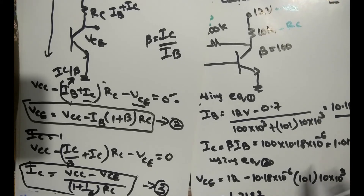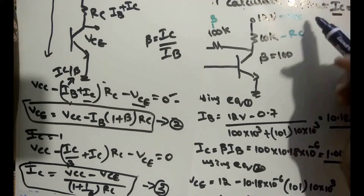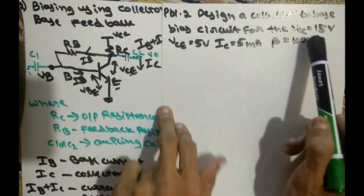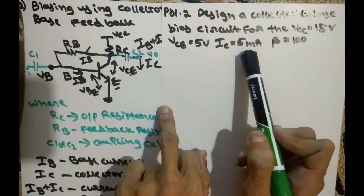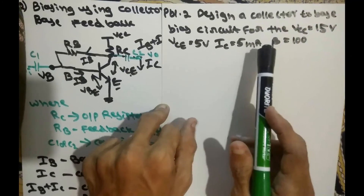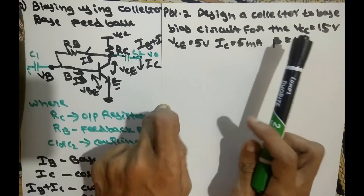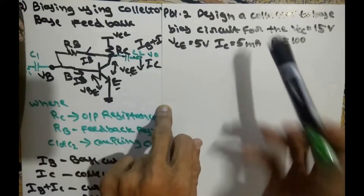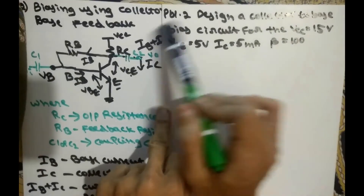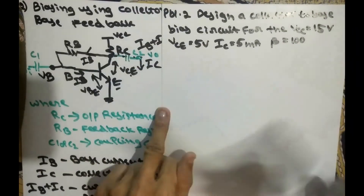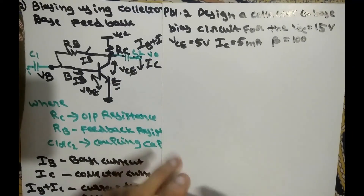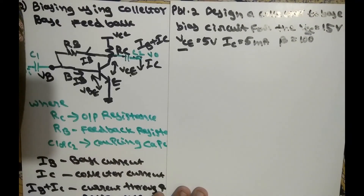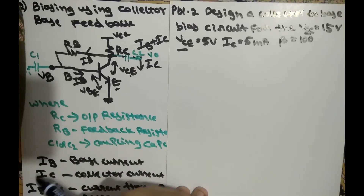In the second problem, design a collector to base bias circuit for VCC equals 15V, VCE equals 5V, IC equals 5 milliamps, and beta equals 100. This is a design-type problem where the Q point is given and we need to find the resistance values RC and RB to achieve this Q point.